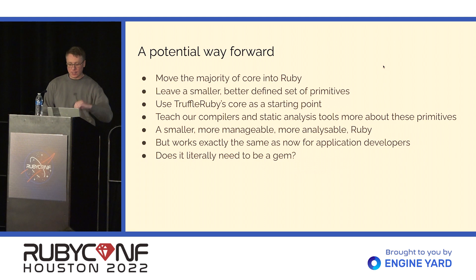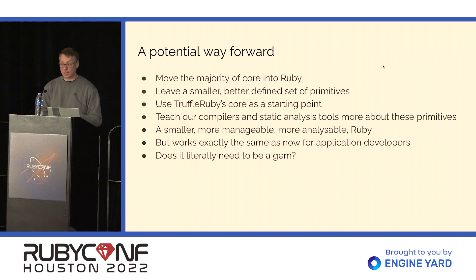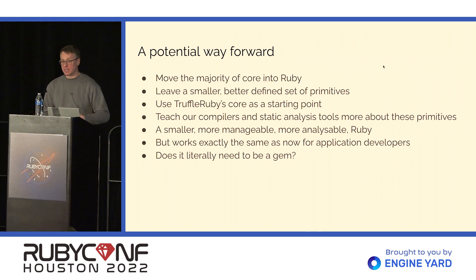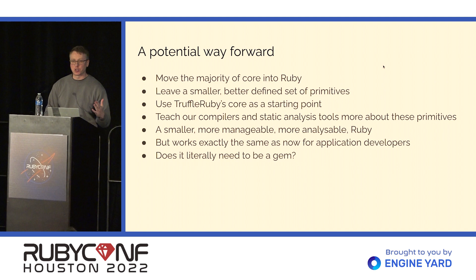This is a potential way forward for Ruby. We can move the majority of core into Ruby, leaving behind a smaller, better-defined set of primitives. We'd create a new version of Ruby's core that we could understand much better. Other programming languages do this — for example, Haskell has something called Haskell Core which is much smaller and simpler; everything can be expressed in it but it's small enough to reason about and write tools for. We could use TruffleRuby's substantial core as a starting point. We could teach our compilers and static analysis tools like typing tools and RuboCop more about these primitives and let them understand the rest of the Ruby code as they would user code. This would give us a smaller, more manageable, more analysable Ruby that works exactly the same for application developers.